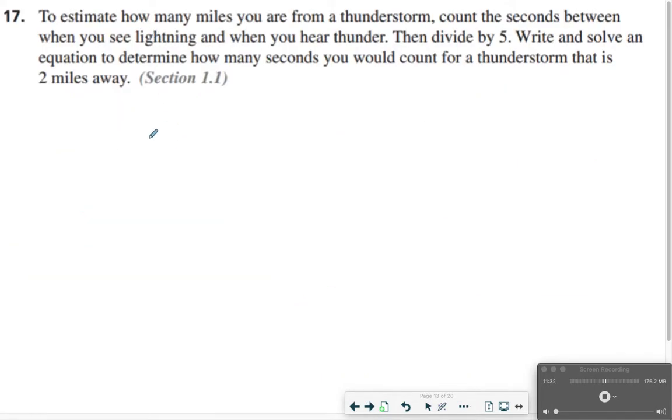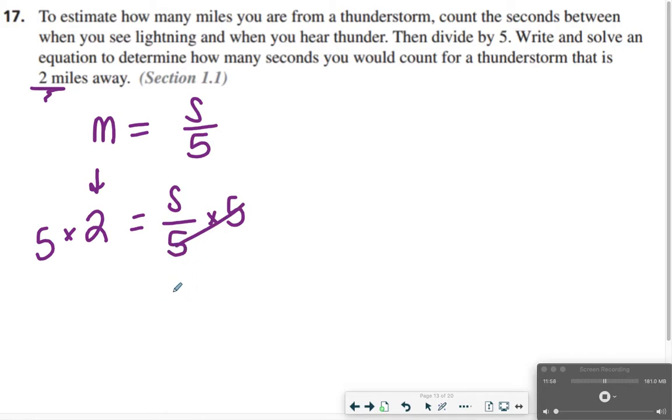Going on to 17. So here's your word problem. For this one, your miles are determined by taking the seconds and dividing it by 5. So we're just trying to figure out how many seconds would we be counting if it was 2 miles away. So I'm just going to replace M with 2, and then solve for S. So S divided by 5, to undo that, I'm going to multiply by 5 on both sides. These 5s can cancel out, and then 5 times 2 is 10, so we should be counting 10 seconds for a thunderstorm that is 2 miles away.